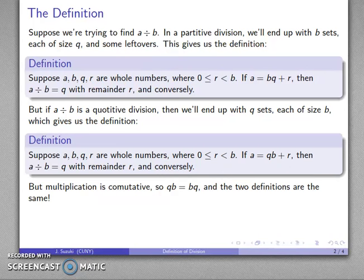But multiplication is commutative. The only difference between these two definitions is that I have B times Q here and Q times B there. So because multiplication is commutative, these two definitions are really the same definition.